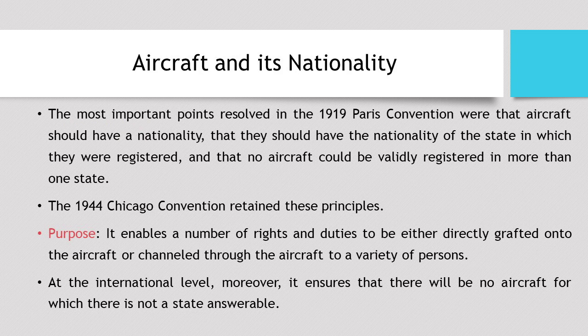With regard to aircraft and its nationality, it is necessary for each and every aircraft to bear the name of the country in which it is registered. The Paris Convention of 1919 clearly provides that aircraft should have the nationality of the state in which they were registered, and no aircraft could be validly registered in more than one state — one aircraft having one single nationality. The basic purpose is that it enables rights and duties to be either directly granted on the aircraft or channeled through the aircraft if anything goes wrong at the international level.